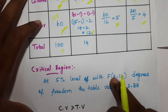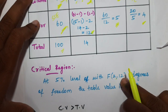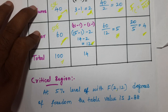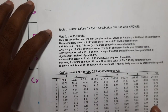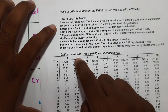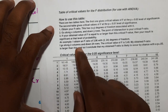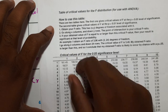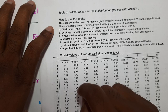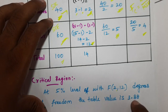Now looking up the F-table value at degrees of freedom (2, 12) at 5% level of significance. From the ANOVA F-table, at v1 = 2 and v2 = 12, the critical value is F(2,12) = 3.89.